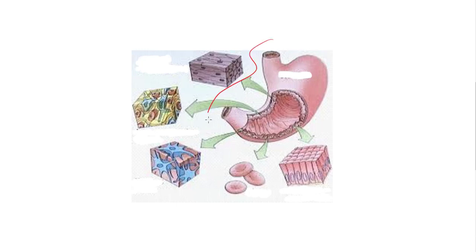Now this structure has various different types of tissue, so for example it would have blood tissue, nerve tissue, muscle tissue, and all these tissues work together to make its function possible. So what do we call this structure that is made up of lots of different types of tissue?